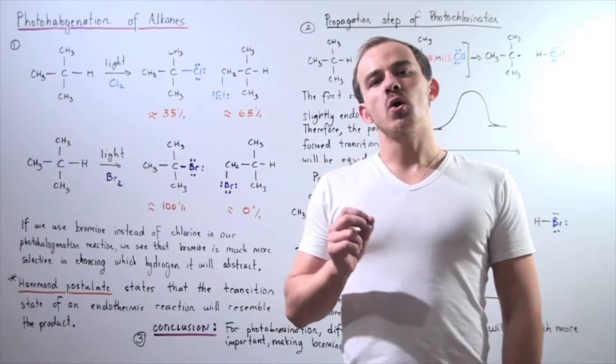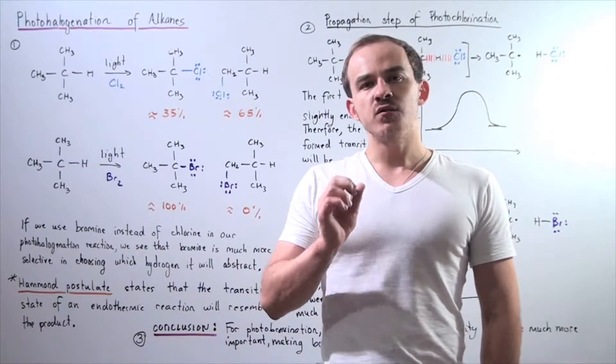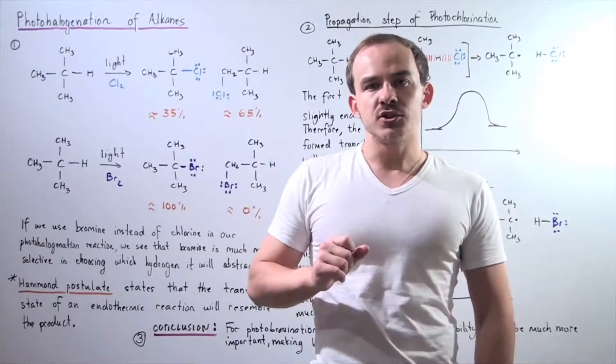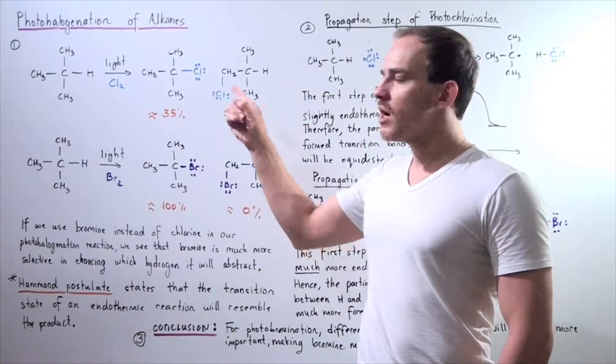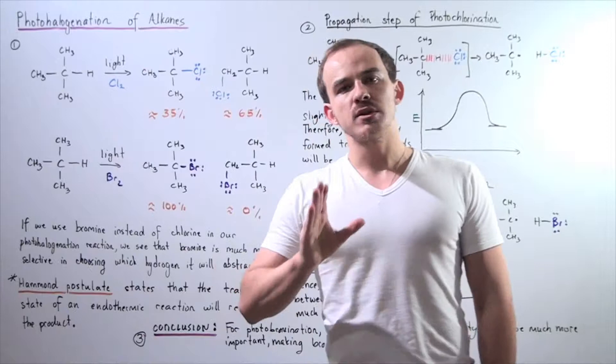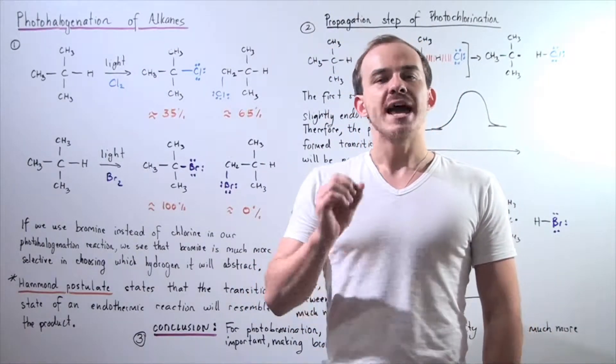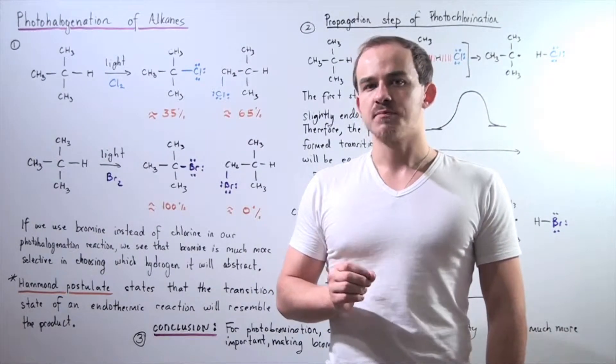In an earlier lecture, we spoke about the photohalogenation reaction and we said that if we begin with isobutane and we add chlorine halogen in the presence of a light source, we produce the following two combination of products. We produce about 35% of tert-butyl chloride and 65% of our isobutyl chloride.